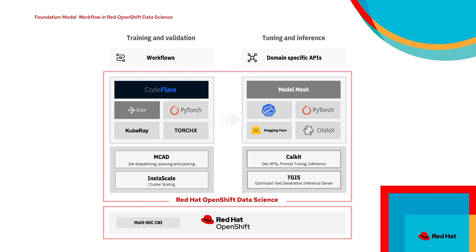On top of TGIS, we have PyGID, which has an abstraction layer API. As you have different pre-trained models coming from different companies, it allows developers to access those models in a continuous way, as well as perform prompt tuning so your models perform better as you feed more data. TGIS also provides multi-GPU inferencing and is very optimized for GPU workloads, with continuous batching of requests to optimize GPU utilization on a cluster.